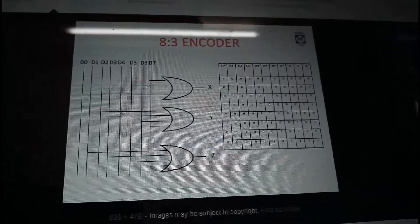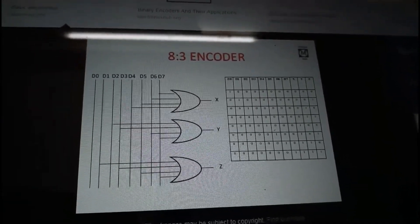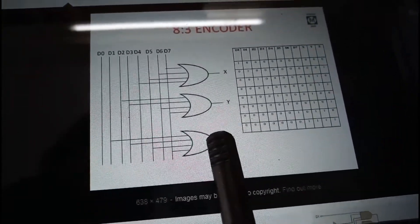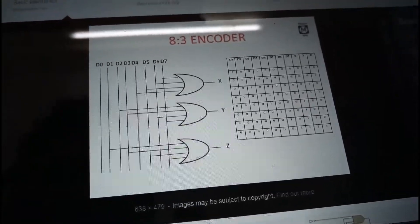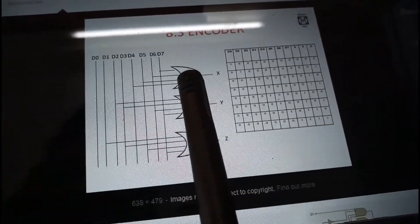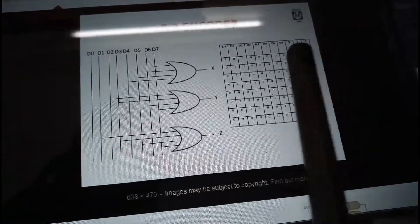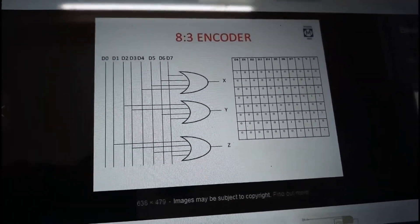So this is the diagram of 8-to-3 line decoder. See here, we are having 8 inputs and we got only 3 outputs. That is nothing but we can just directly connect each, which will be having how many inputs? 3 to 4 inputs each. X, Y, Z will be having 3 to 4 inputs, so we can directly connect them.